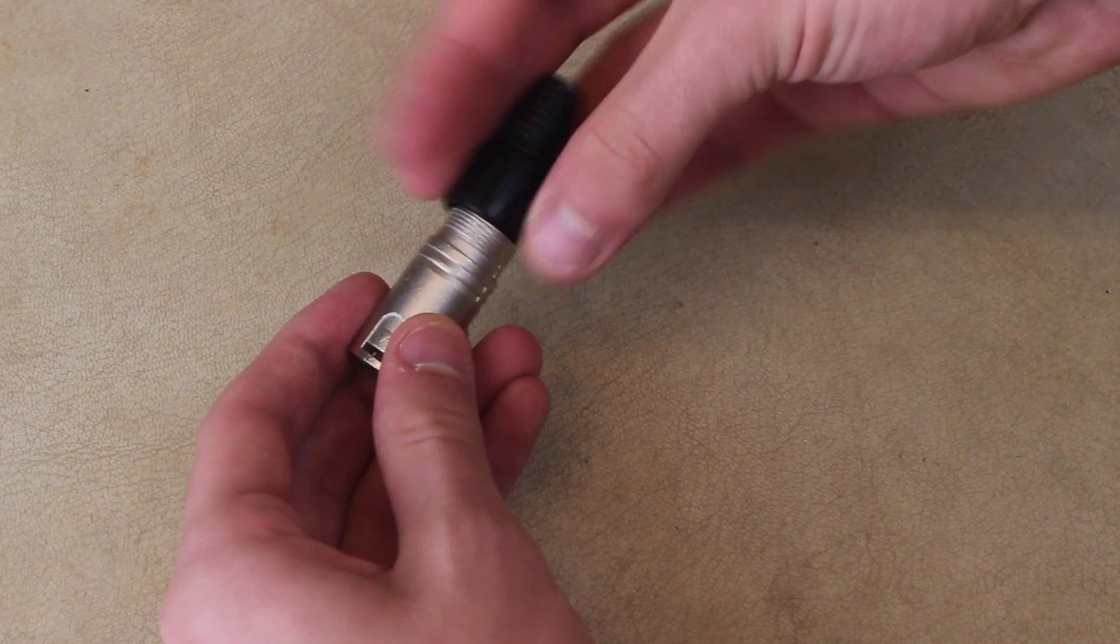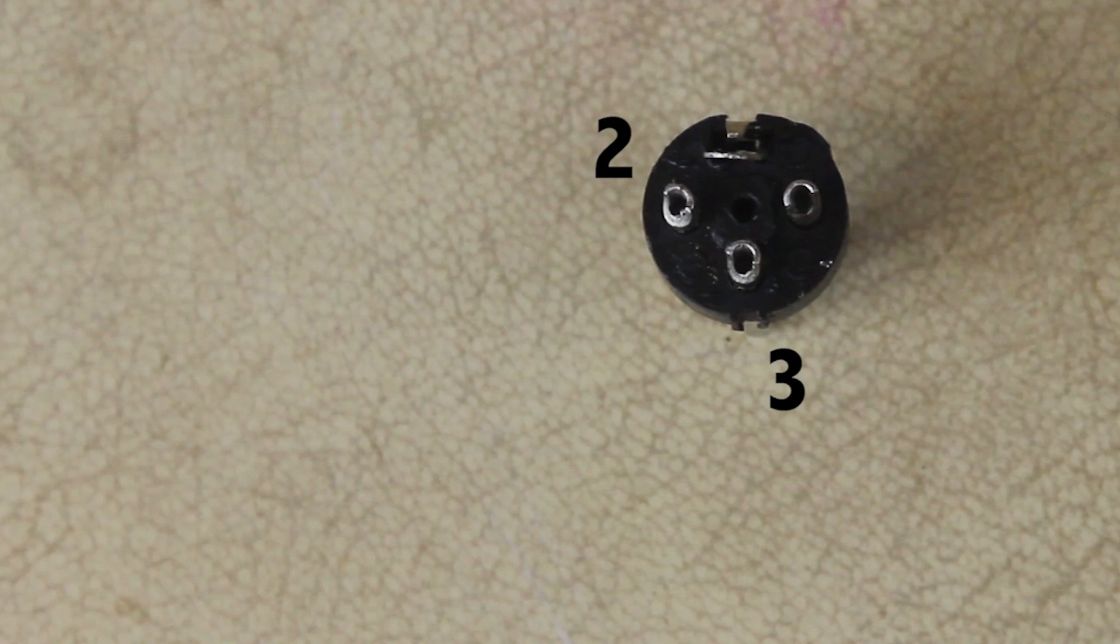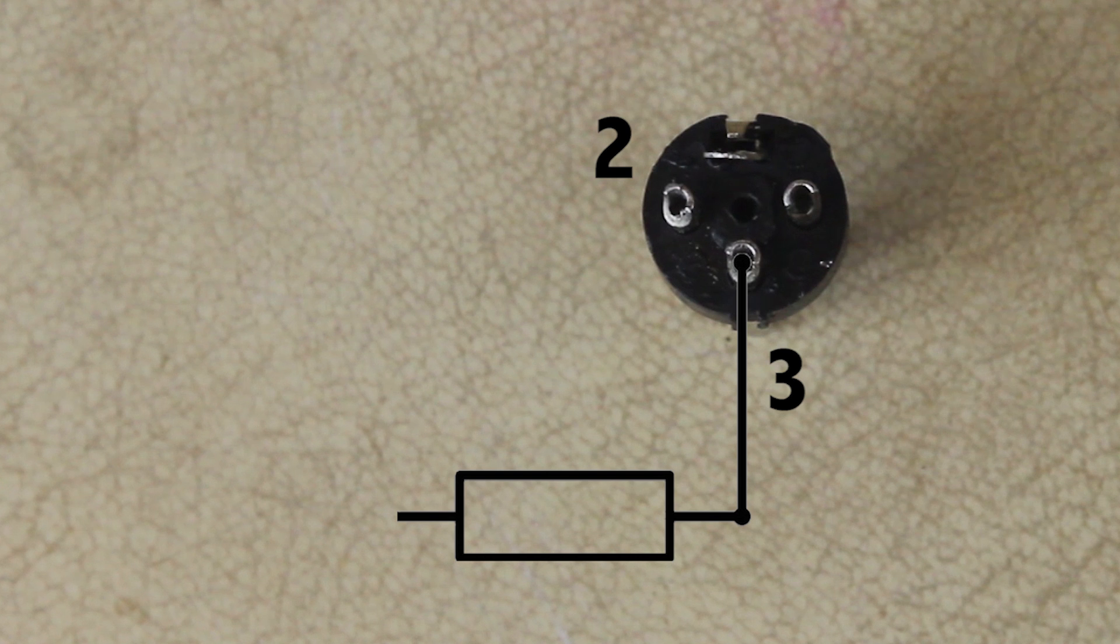So first we need to take apart our XLR plug. To create our DMX tester we need to connect the resistor to pin 3, then the LED, then connect that back to pin 2. It's really very simple.